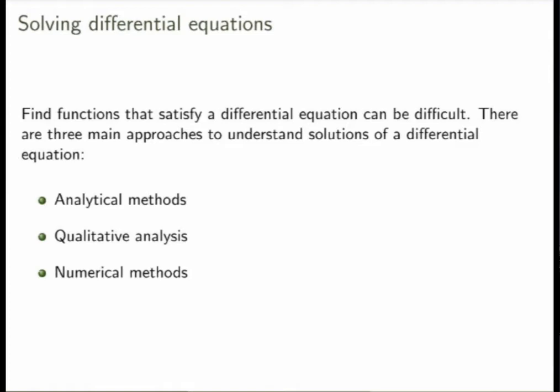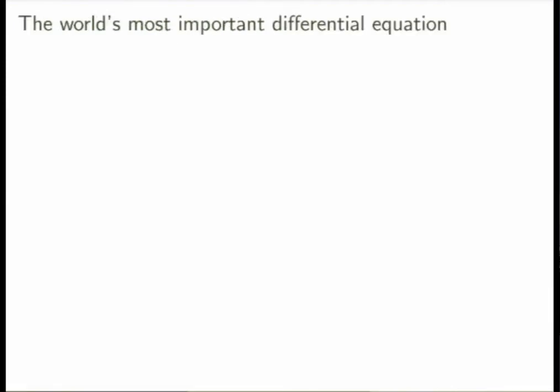The third approach is numerical methods, which is also very, very important. If you want to find a solution but can't use analytical methods, you may want to ask a computer to find it numerically — but you need to tell the computer what to do. Now let's get started by looking at our first example of a differential equation, which is perhaps the most important one in the world. Let me introduce it from the point of view of population dynamics. Suppose you're looking at the population of fish in a pond, and you want to model the rate of growth of the population.